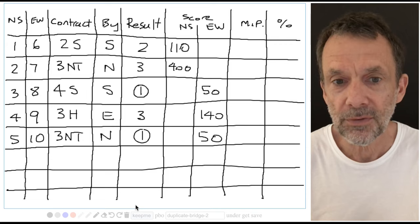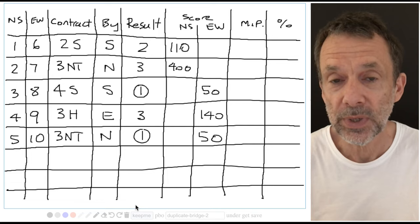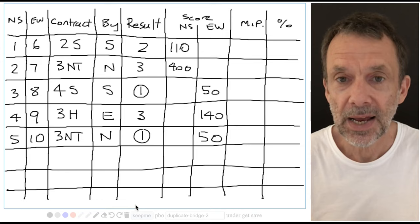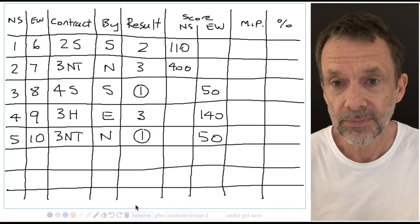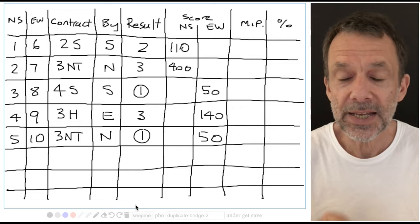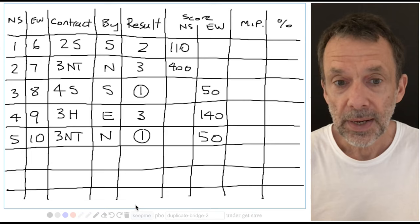Now, before we go any further, let's just quickly have a look at line three, where north-south pair three has played against east-west pair eight. And we see the contract was four spades by south going down one for a score of 50 to east-west. That 50 to east-west is the same thing as minus 50 to north-south.